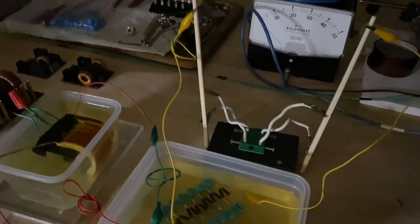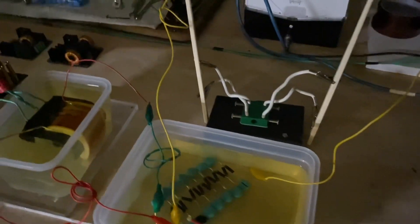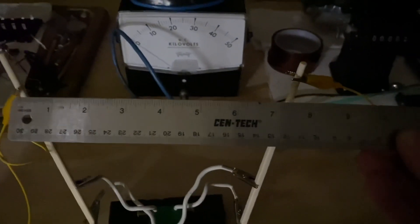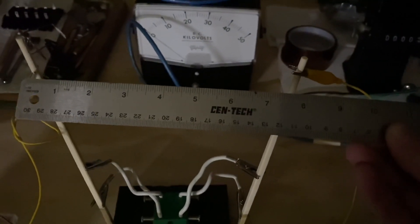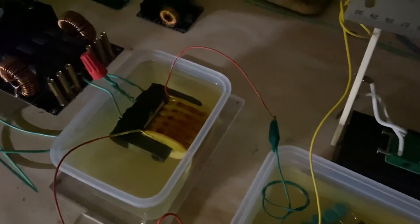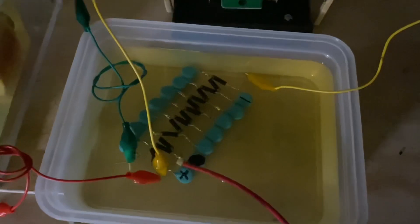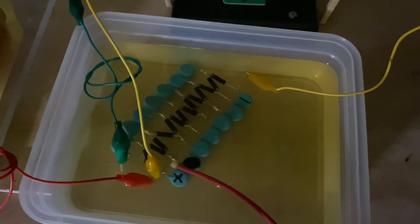Alright, this is a brief demonstration video to show the 8 inch spark length of the ZVS driven custom flyback. It's powering a seven stage voltage multiplier.